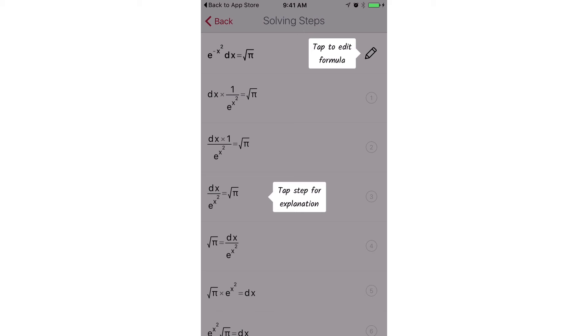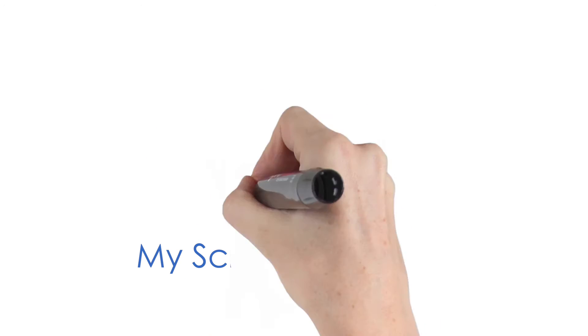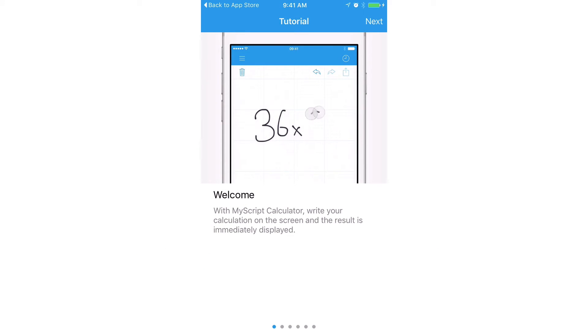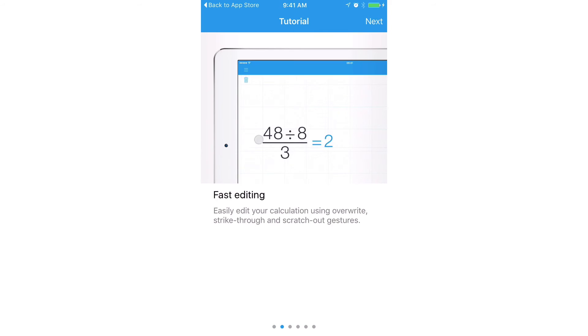MyScript Calculator is also a free app. If you'd rather write out your equations versus typing them, this app could work for you. You can use your own handwriting to write out the equation and the app calculates the answers for you. You do not have to use a keyboard. Scratch out gestures can easily delete symbols and numbers.